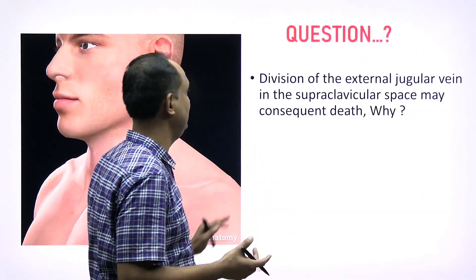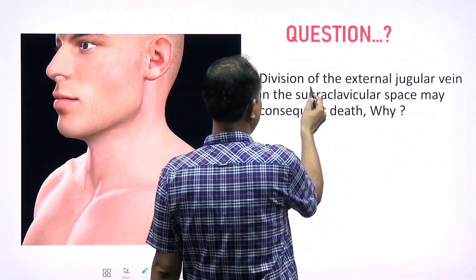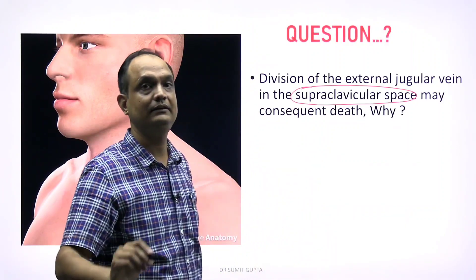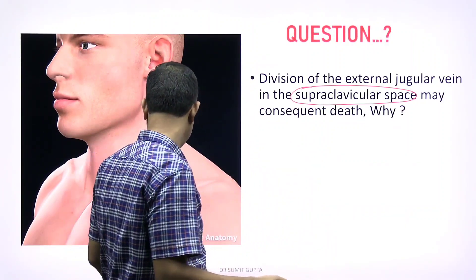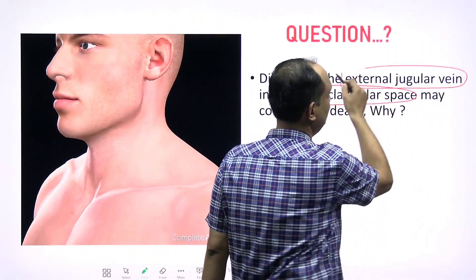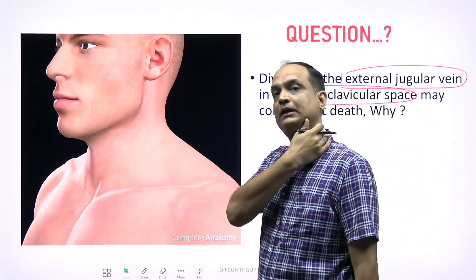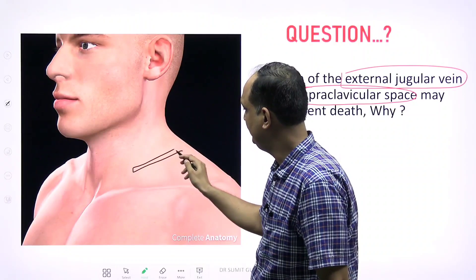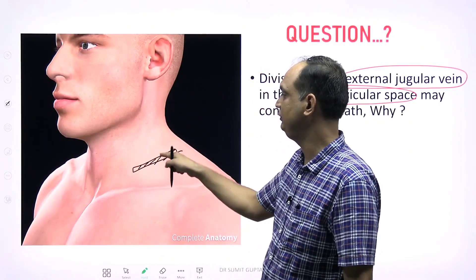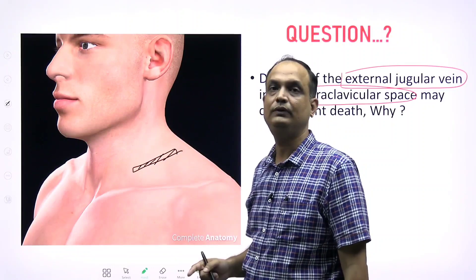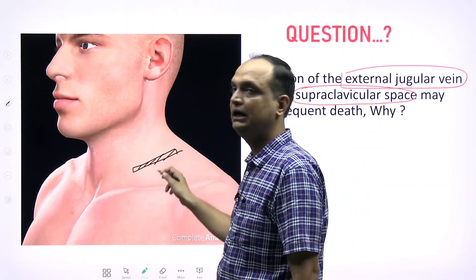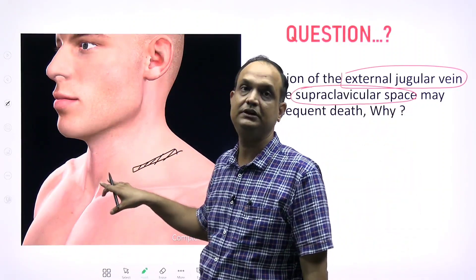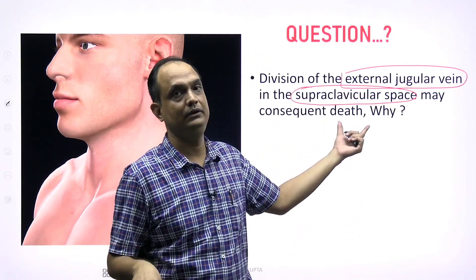This is a very commonly asked exam question: a patient has an injury in the supraclavicular space involving a structure named the external jugular vein. Suppose this is the side of the neck — the injury occurs in the supraclavicular region, and you find injury of the external jugular vein. If the patient is not attended to in time, they may die.